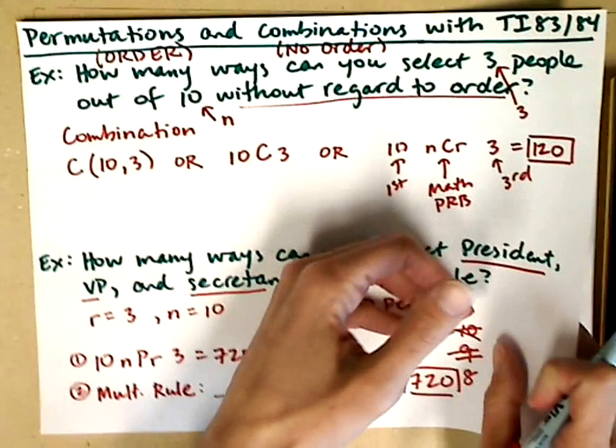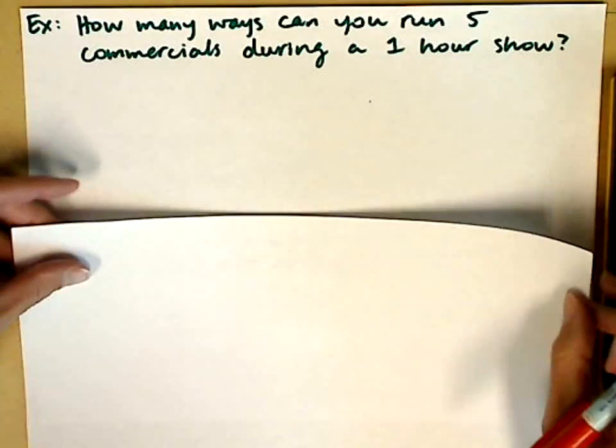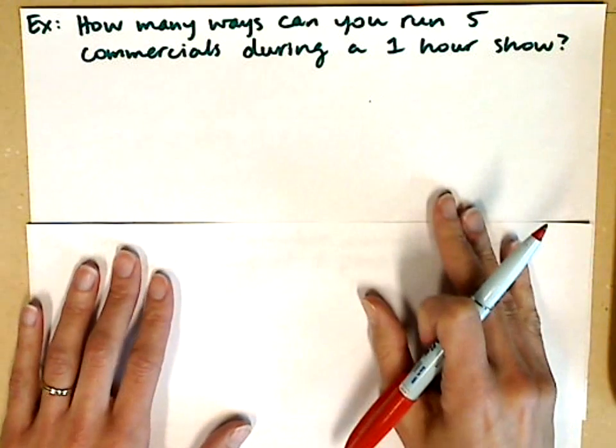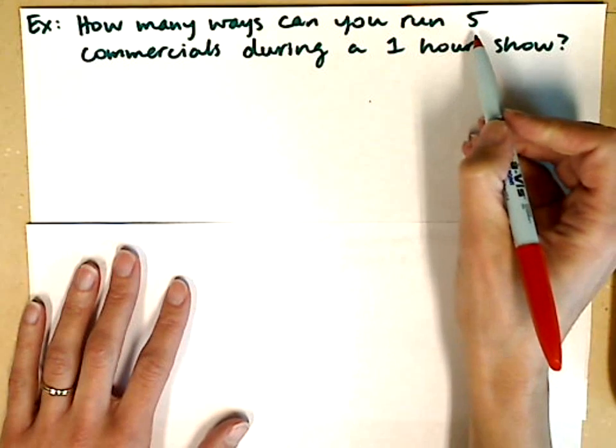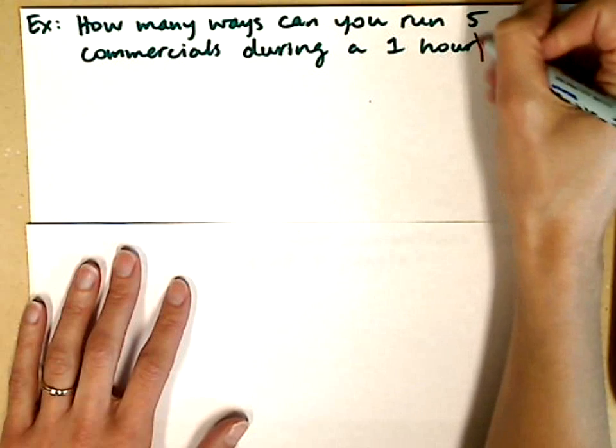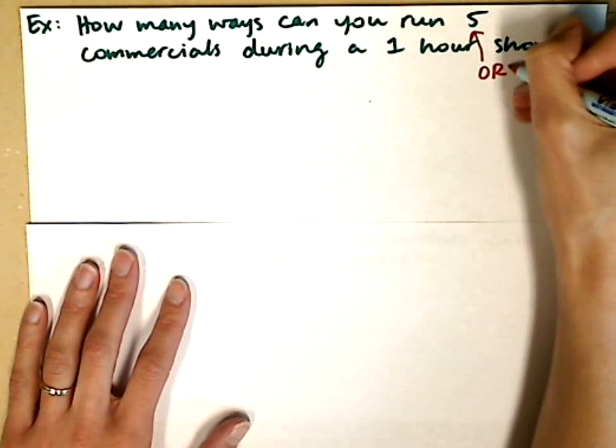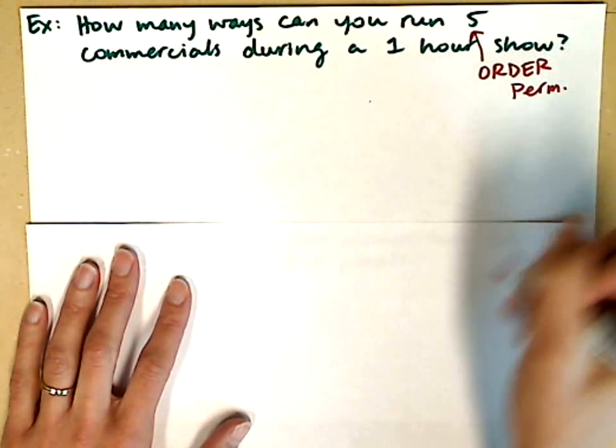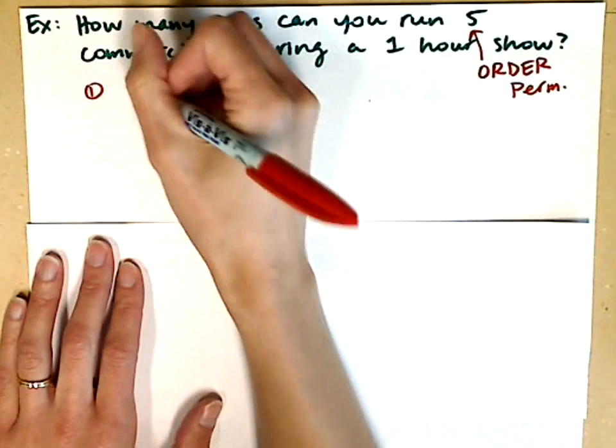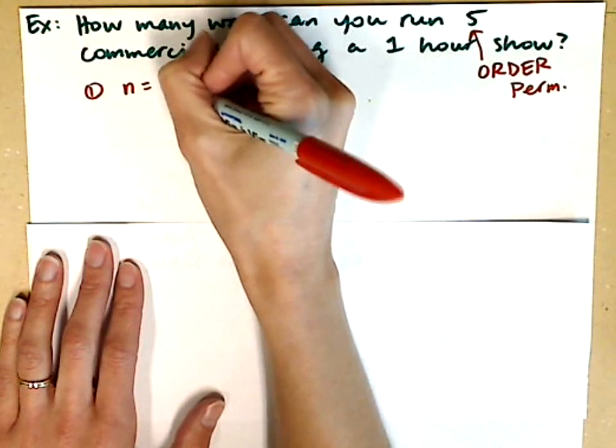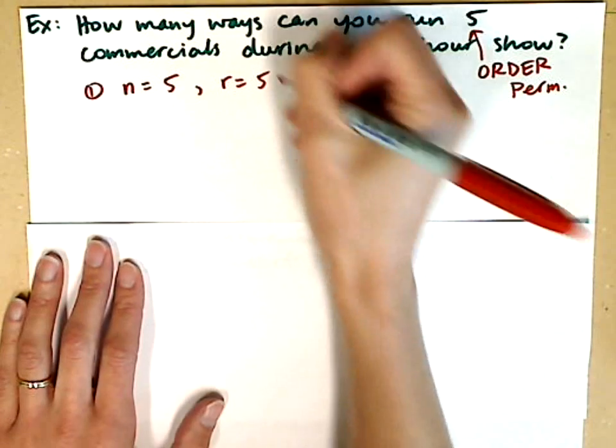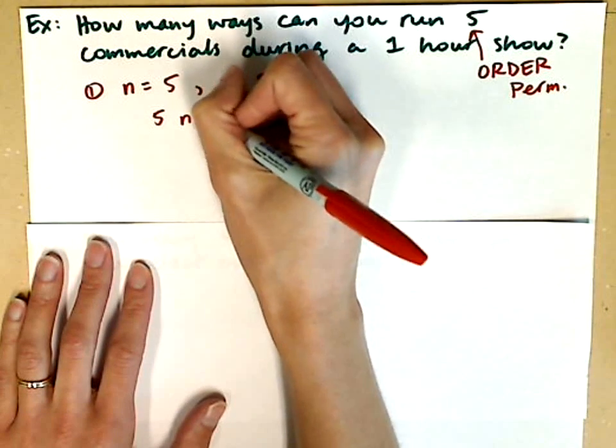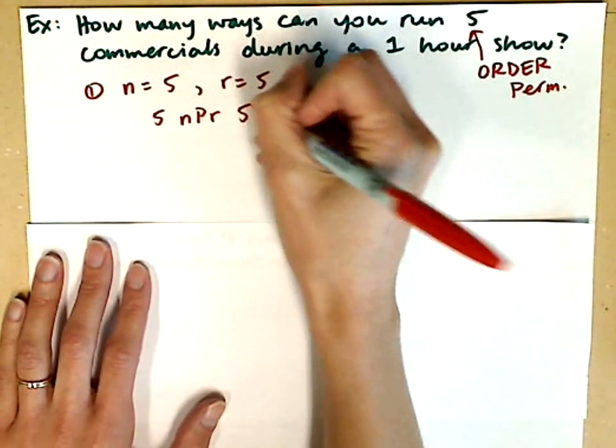In our third example, we are asked how many ways can you run five commercials during a one-hour show? We've got five commercials and want to reorder all five of them to figure out the possibilities. In this case, order matters. If order matters, that means we're doing a permutation. Using the calculator, I need to identify N, which is 5, and R, which is also 5. We're going to reorder all five of them. So in the calculator, we'll type 5 nPr 5.